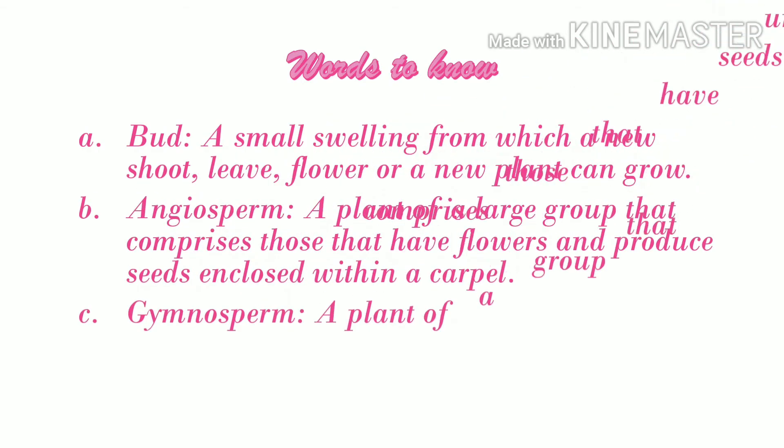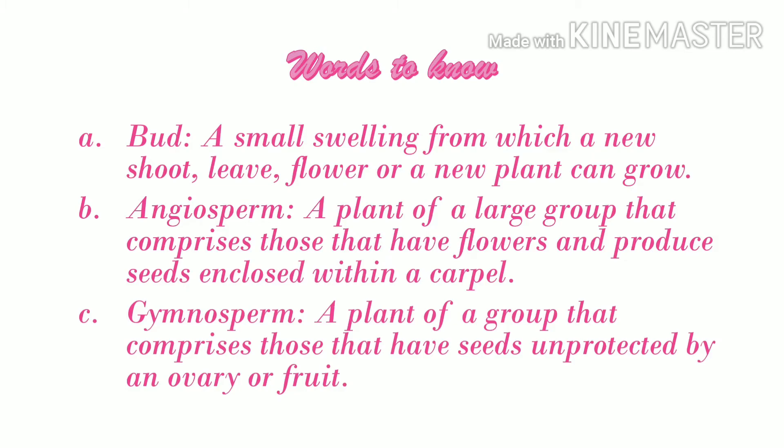Let us learn some difficult words. Bud: a small swelling from which a new shoot, leaf, flower, or new plant can grow. Angiosperm: a plant of a large group that comprises those that have flowers and produce seeds enclosed within a carpel. Gymnosperm: a plant of a group that comprises those that have seeds unprotected by an ovary or fruit.